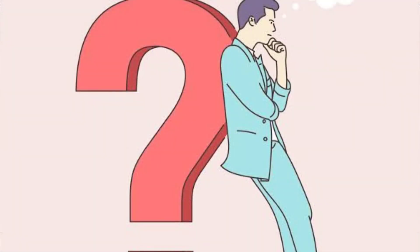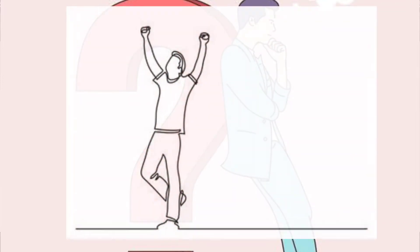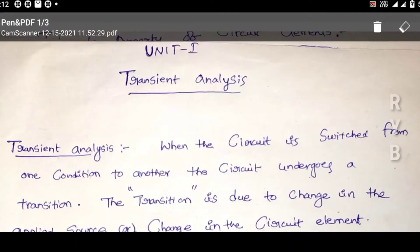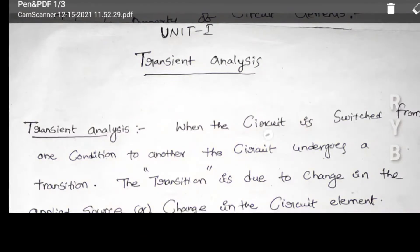Whenever a person, situation, or condition is changed — a sudden shock is given to a person — they may go to a transient condition. That means whatever state you have, that state may change according to the situation. Similarly in transient analysis, transient means when a circuit switches from one condition to another condition.